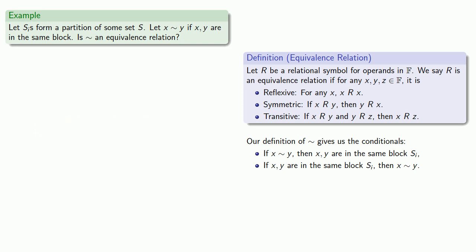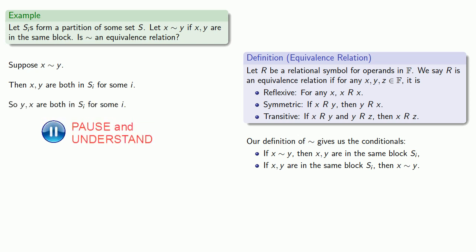We need to show symmetry so we can always assume the antecedent of a conditional. So suppose x is related to y. Our definition says that if x is related to y, then x and y are in the same block. But since the order that we list them doesn't actually matter, so y and x are both in xi. Definitions are the whole of mathematics. All else is commentary. If they're both in the same block, then y is related to x.